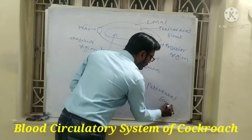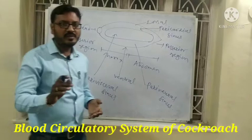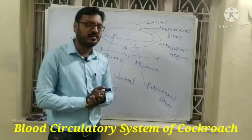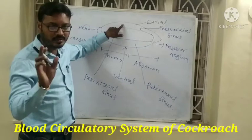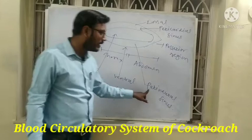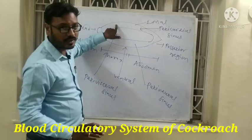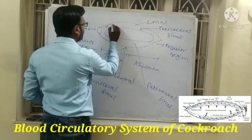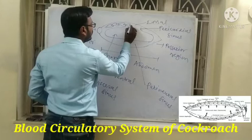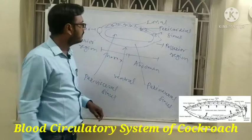The entire cavity is called the hemocoel — the cavity which contains the circulatory system. The dorsal side is the pericardial sinus, the middle portion is the perivisceral sinus, and the inner region is the perineural sinus. The heart has 13 chambers total, numbered first through thirteenth.